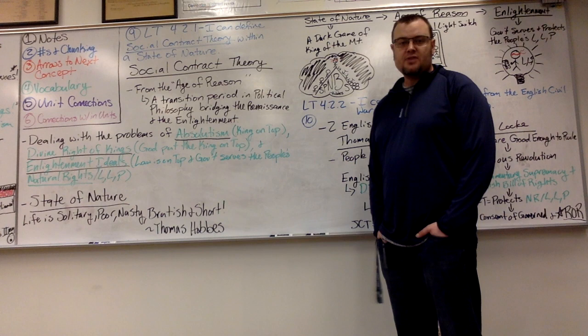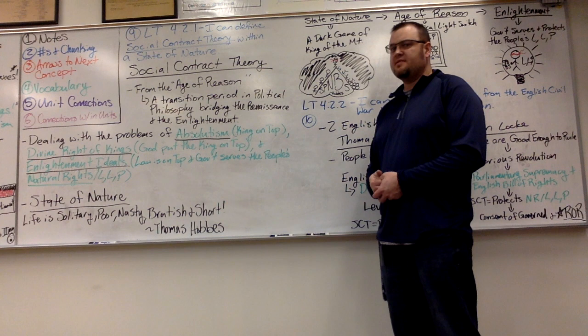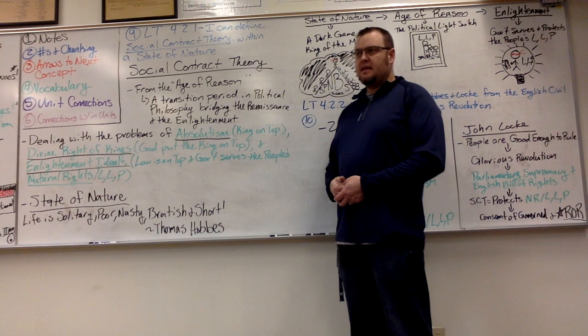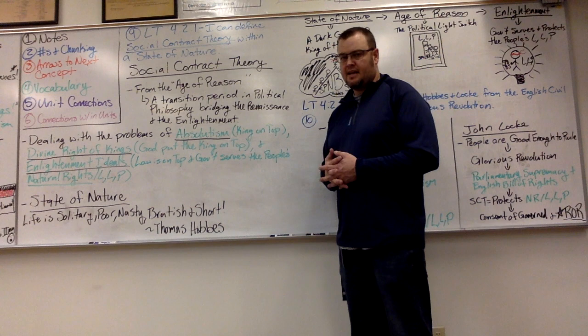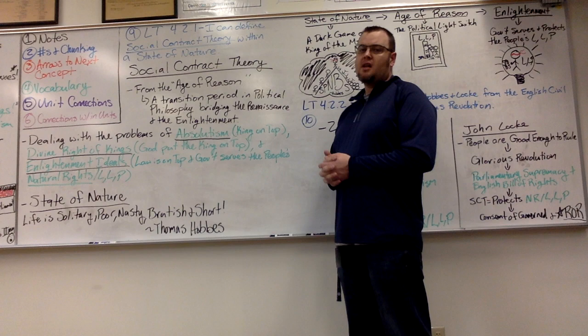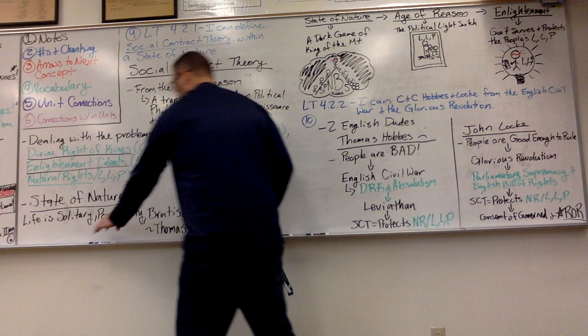What we really have to understand though, is where does this come from? There's this idea that without government, in the Paleolithic time period as opposed to the Neolithic Revolution, we have this thing and it's called a state of nature. It's basically darkness. And according to Thomas Hobbes, one of our big-time philosophers in the Age of Reason, it is solitary, poor, nasty, brutish, and short.